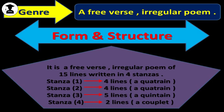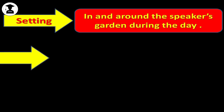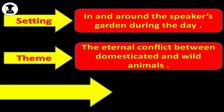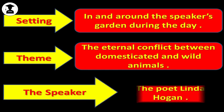Moving to a different point, what is the setting of this poem? As you know, setting includes time and place. The setting of this poem is in and around the speaker's garden during the day. What is the theme of this poem? The eternal conflict between domesticated and wild animals. Who is the speaker of this poem? The speaker is the poet Linda Hogan herself.